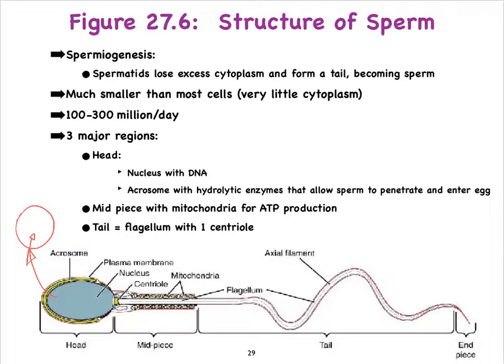Many, many sperm cells are produced per day — 100 to 300 million on average.